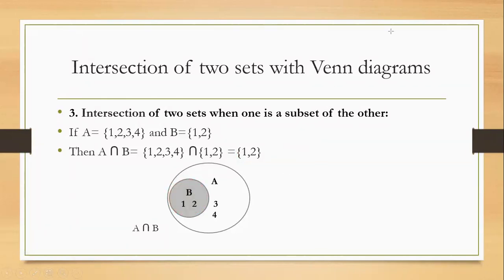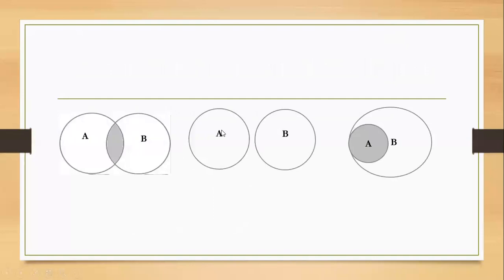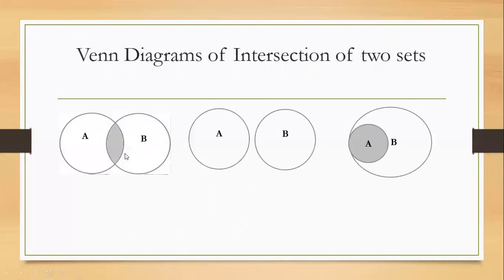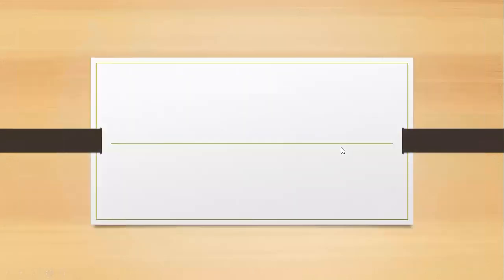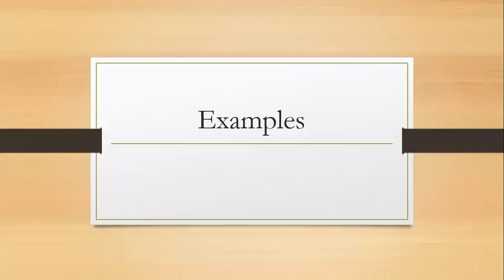Now it's easy to identify the three Venn diagrams for intersection: overlapping, disjoint, and when one set is a subset of the other. Before starting the examples, we are going for a break. See you within 2 to 3 minutes. Be there with me, my dear. Don't go anywhere.